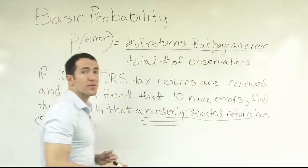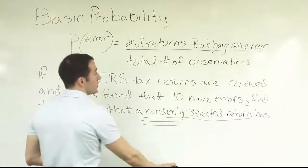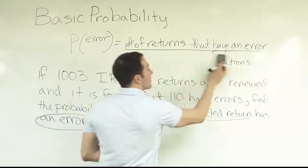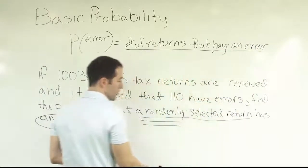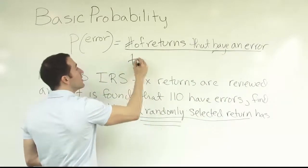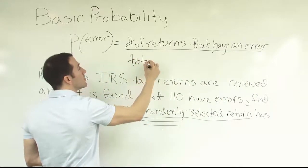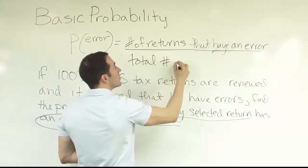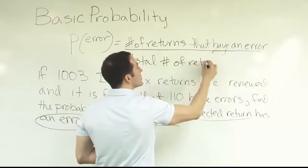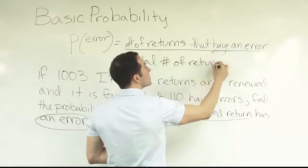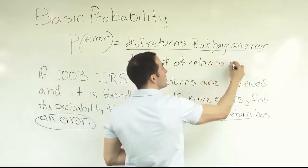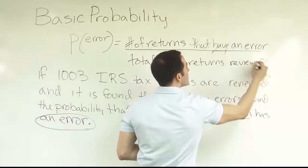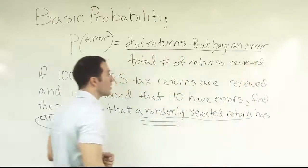And then we're going to divide by the total number of possible observations — in this case, the total number of returns reviewed.